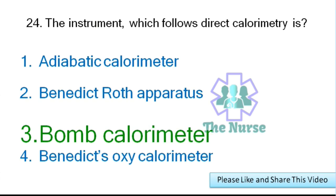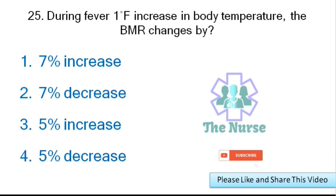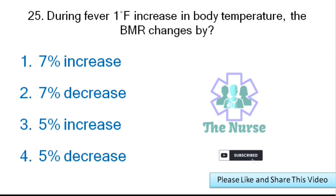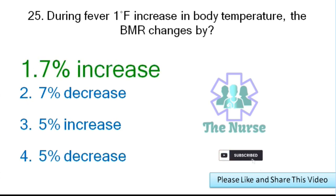Next question: During fever, with a 1-degree Fahrenheit increase in body temperature, the BMR changes by how much? Options: 7% increase, 7% decrease, 5% increase, or 5% decrease. Correct answer: 7% increase.